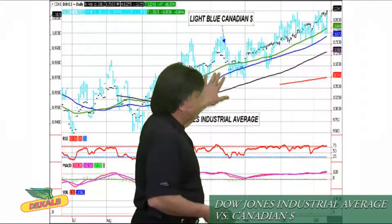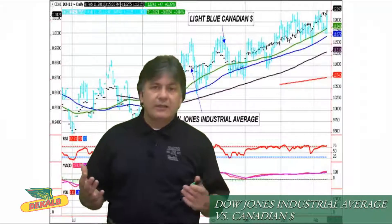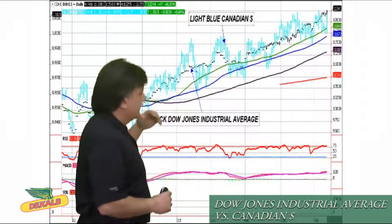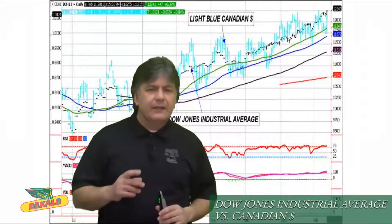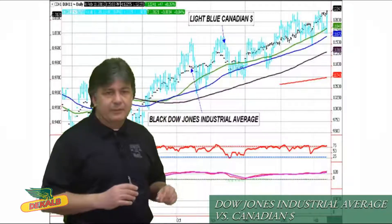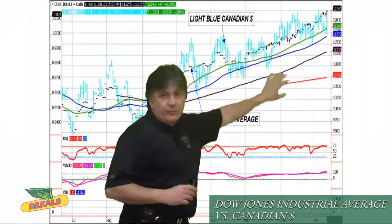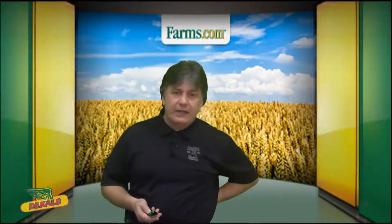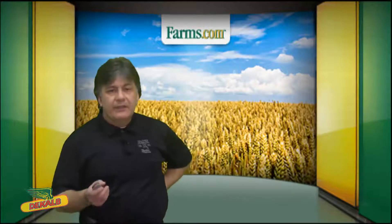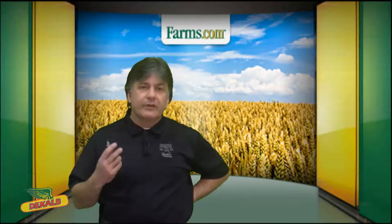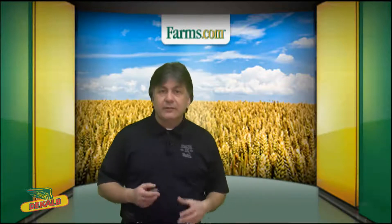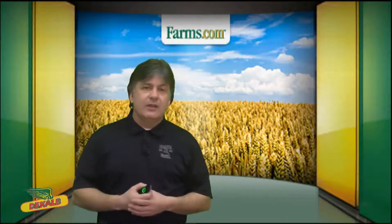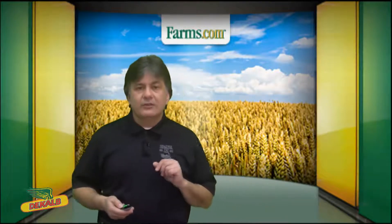One trick I like to use is the Dow Jones Industrial Average — the stock market in the States made up of the top 30 Dow stocks. From this chart, the black is the Dow Jones and the light blue is the Canadian dollar. There's a huge correlation between the Dow Jones Industrial Average and the Canadian dollar. Any good news from the U.S. is good news for the Canadian dollar and the Canadian economy, as they are our biggest trading partner. A rising Dow Jones means the market is confident about the economy and corporate profits, which supports a higher Canadian dollar.